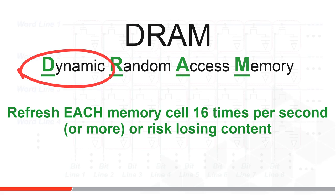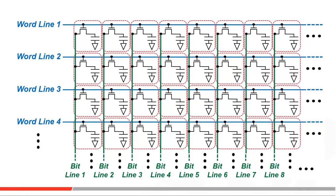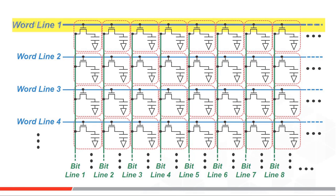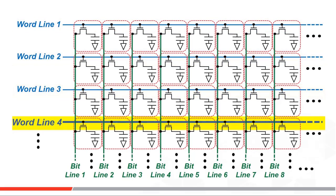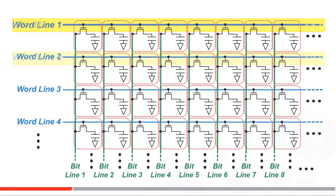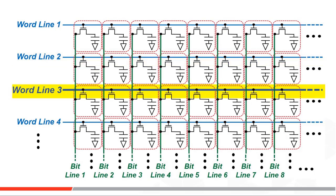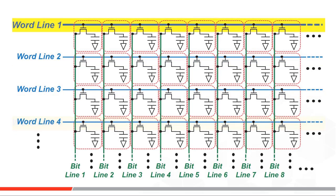So how is a refresh done? Well, the trick is to have the cells refresh themselves every time they are read. Then just by stepping through all the address word lines and doing a read-like command sequence at least 16 times a second for every word line will keep your DRAM data just like you wrote it.